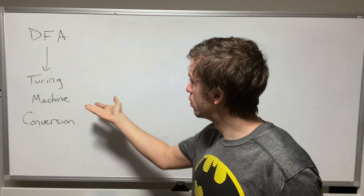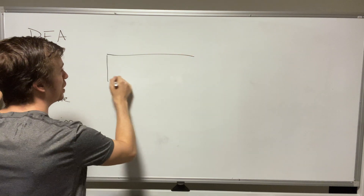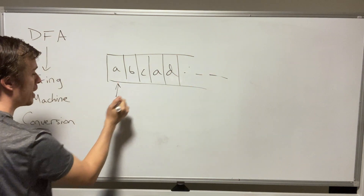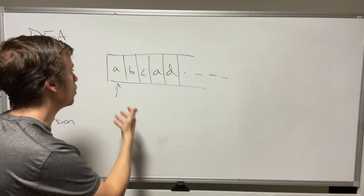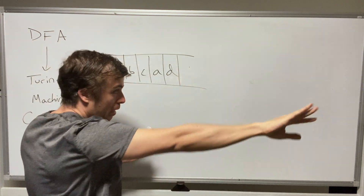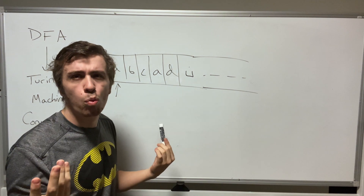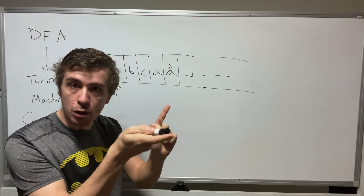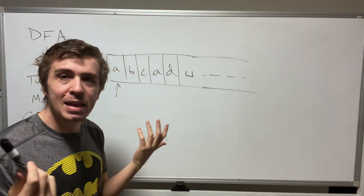A DFA is just a thing where you're provided an input and you go right essentially, so the Turing machine that we want to use to emulate the DFA should in principle just move right. Think about how a Turing machine works — it's a one-way infinite tape. The Turing machine has to write stuff to the tape, but the DFA doesn't do any writing at all, so we need to handle that. Also, remember that a Turing machine is infinite, so after the input ends we have blanks, and we need to think about what to do when we hit those blanks.